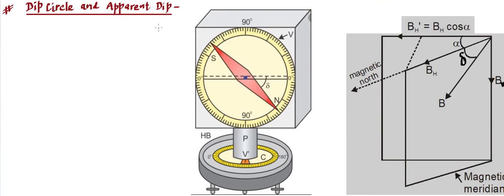Hello everyone. Let's move forward in earth magnetism or geomagnetism. Two important aspects in this slide we are going to find: the dip circle and apparent dip. These two terms we need to understand.